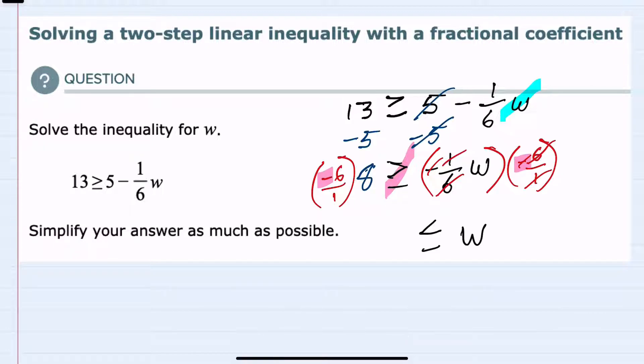And then on the left-hand side I now have just a negative six times an eight, or a negative 48. We have solved for w and simplified as much as possible.